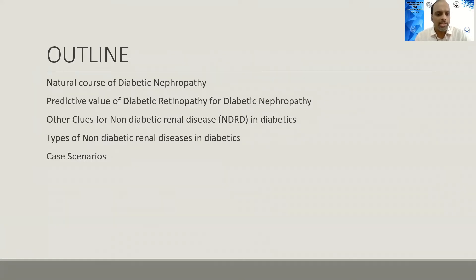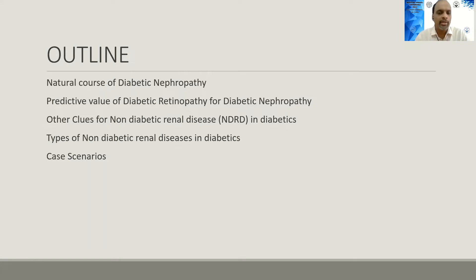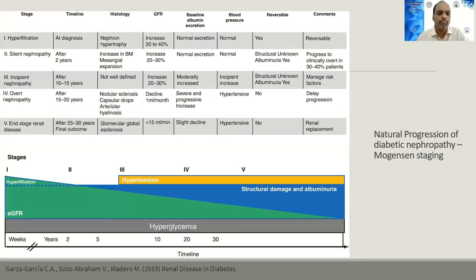The outline of my talk: I shall discuss the natural course of diabetic nephropathy, whether diabetic retinopathy can help predict diabetic nephropathy, clues for non-diabetic renal disease, the types of non-diabetic renal diseases commonly seen in diabetic patients, and finally some case scenarios.